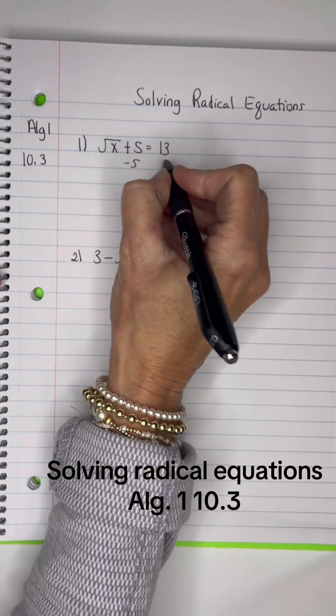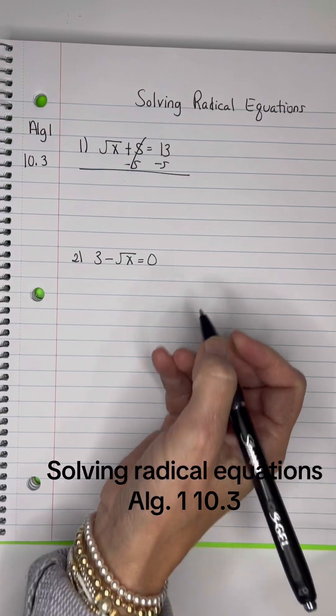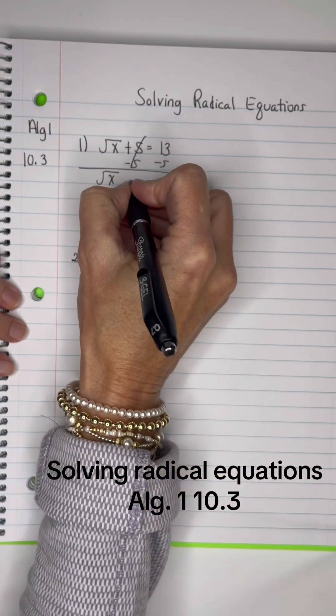So I will subtract 5 from both sides, which is the opposite operation, and I'm left with the square root of X equals 8.